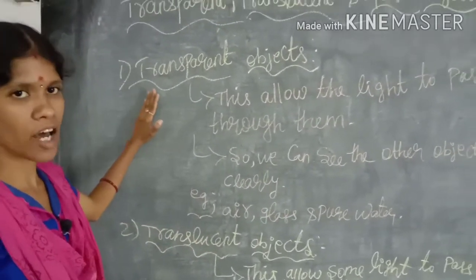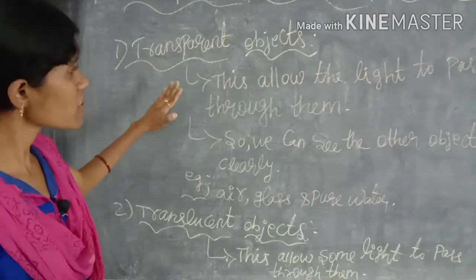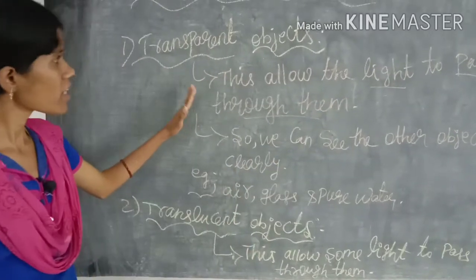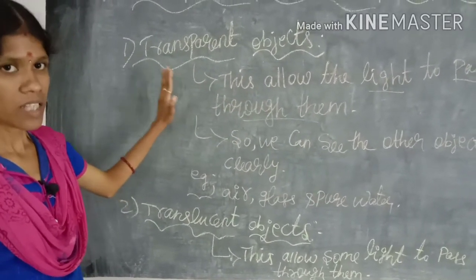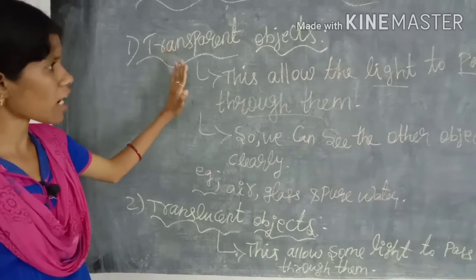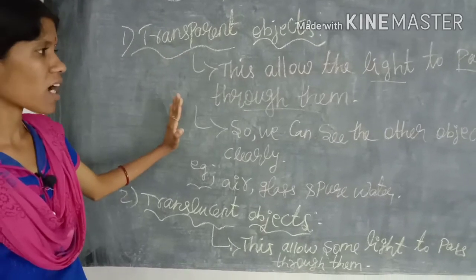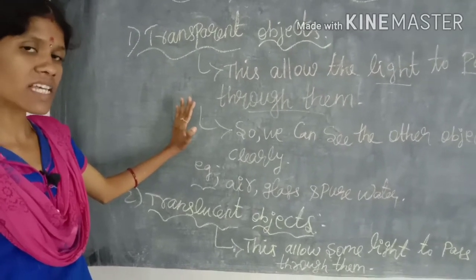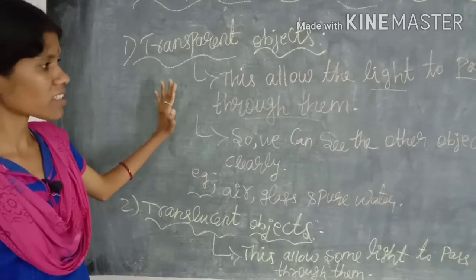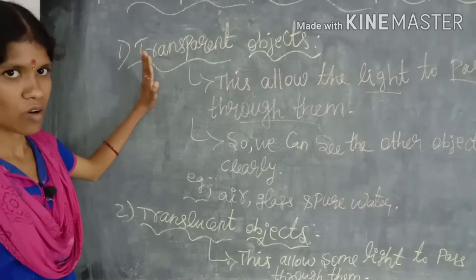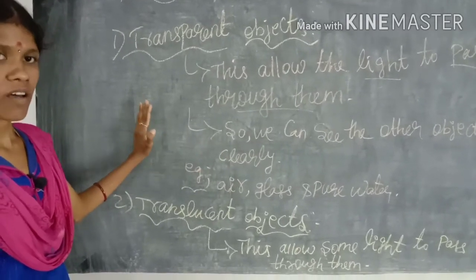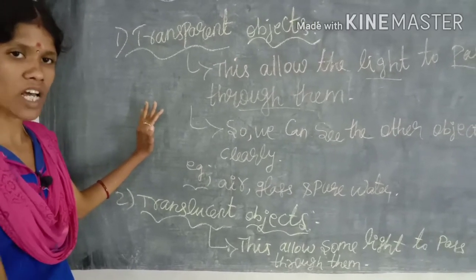The first one is a transparent object. This allows light to pass completely through it. Because light passes through the material, we can clearly see the other objects on the other side. Examples of transparent objects are air, glass, and pure water. Using glass, we can clearly see the images which are outside the glass.